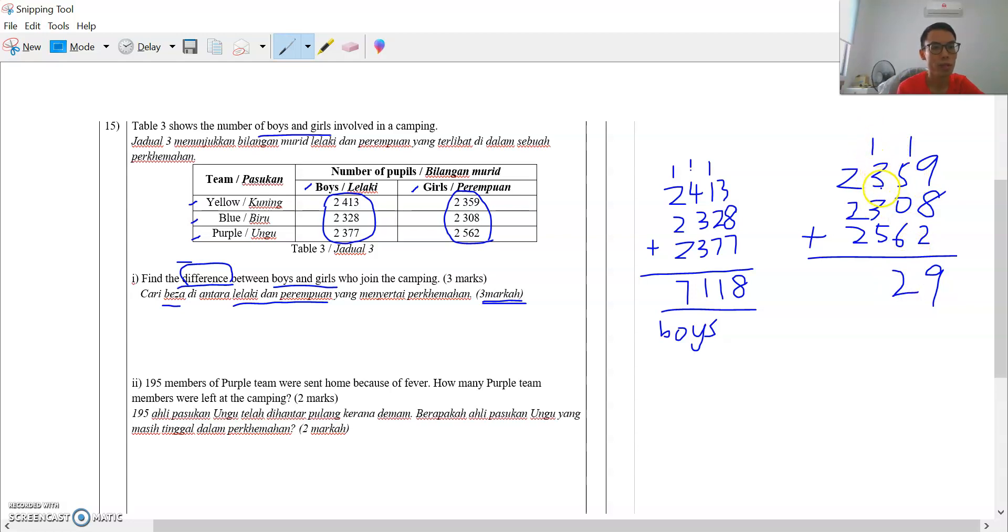1 plus 3 is 4. 4 plus 3 is 7. 7 plus 5, 12. 3 times 2 is 6 plus 1 is 7. So all these are girls.